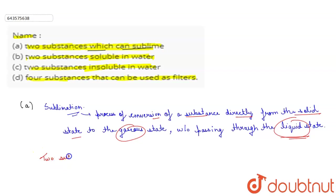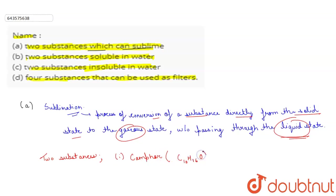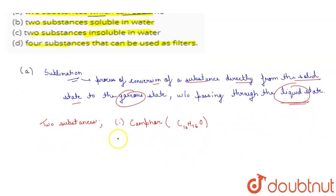So the two substances that can sublime are: first one is camphor, that is C10H16O. And the second one is naphthalene, that is C10H8.